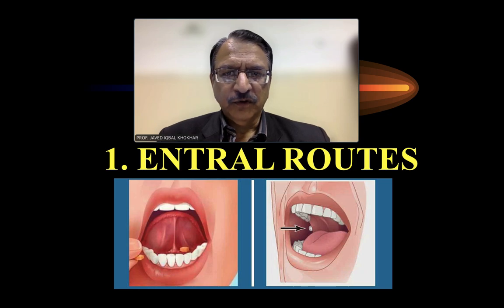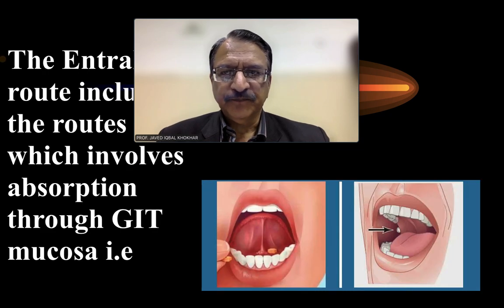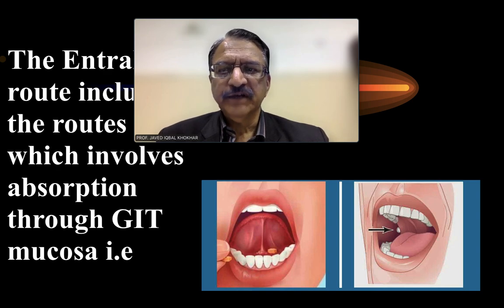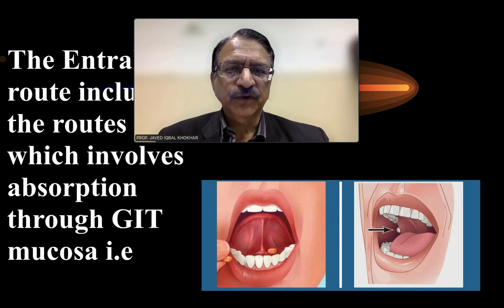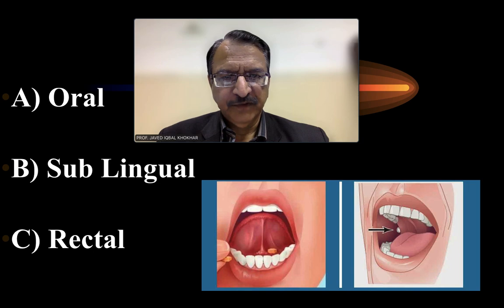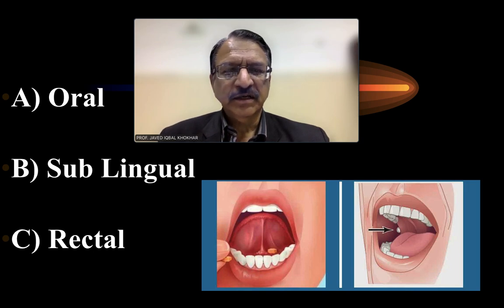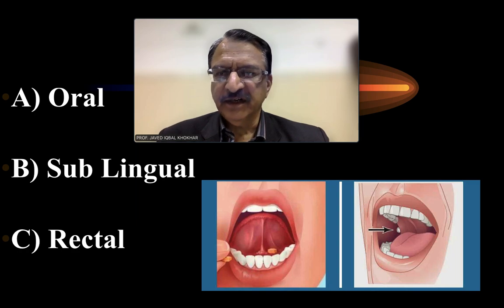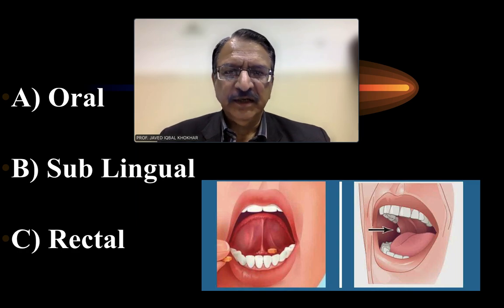Now talking about the enteral routes — the enteral route includes all the routes which involve absorption from the gastrointestinal tract mucosa, starting from the oral cavity, sublingual or rectal. From these places and similarly the gastrointestinal tract mucosa, the drugs and the poison get absorbed.